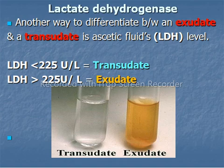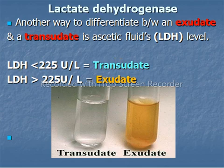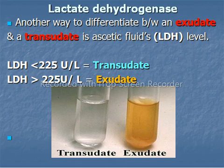Another way of differentiating between an exudate and transudate sample is through the lactate dehydrogenase (LDH) test. If the sample has less than 225 LDH, it is considered a transudate. When the LDH level is greater than 225, the sample is considered an exudate.